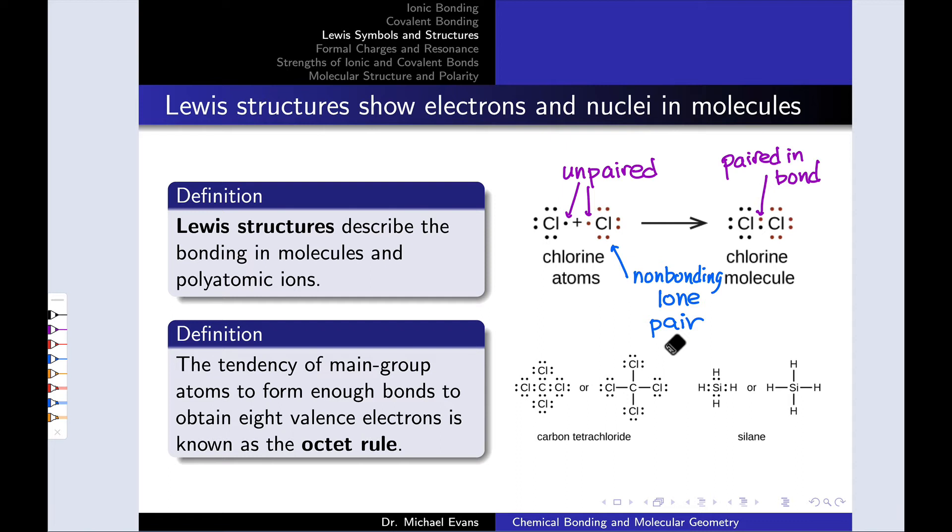When we do this, as we start to examine Lewis structures for a wide variety of molecules, a kind of empirical inductively developed rule that becomes apparent is that many main group non-metal elements—nitrogen, oxygen, fluorine, particularly in the second period of the periodic table—tend to form enough bonds to obtain eight total valence electrons around them. This is known as the octet rule since the eight electrons around the atom represent an octet of electrons.